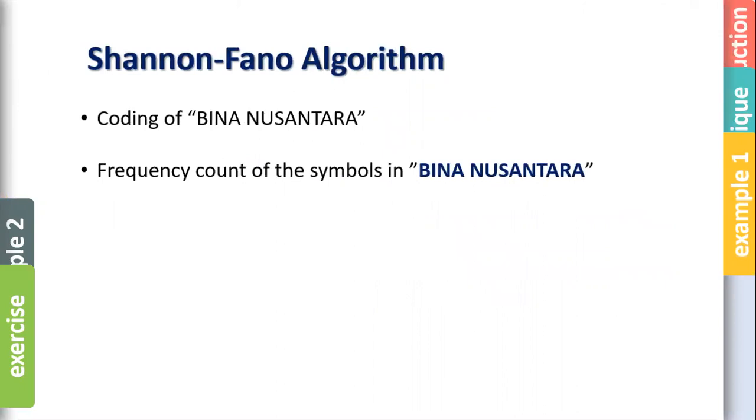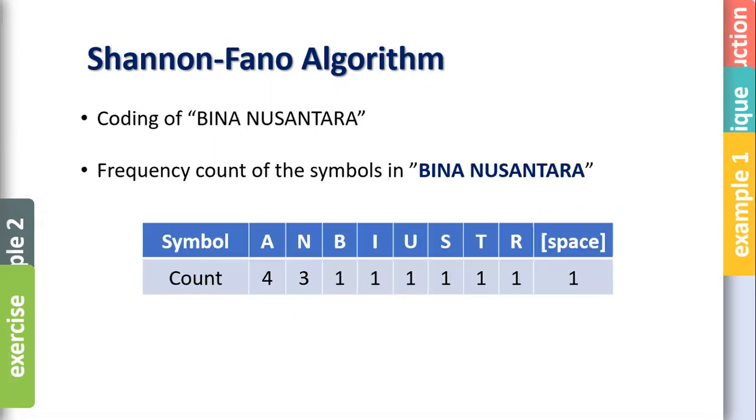Example using BINA NUSANTARA. If you look, how many B over there? One. How many I? Also one. And how many N? Three. Or A's. So if you create a table, it looks like this. We also count space over here because you need space to separate BINA with NUSANTARA. Then you already have step one.